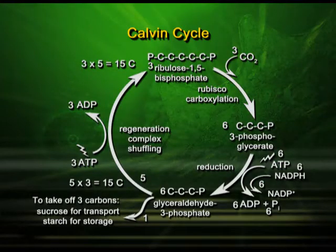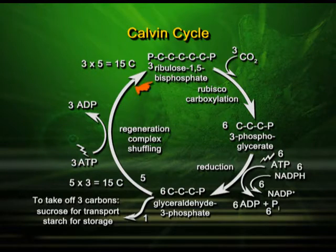Unless regeneration takes place, the cycle will not continue. The cycle would stop with the production of glucose and starch — full stop. The next cycle has to continue so that food is continuously produced by the process of photosynthesis. In regeneration, the plant will use more ATP, which will be converted to ADP, and the end result will be ribulose 1,5-bisphosphate — with which the Calvin cycle began.